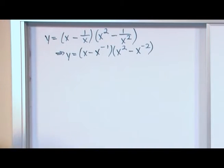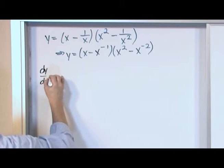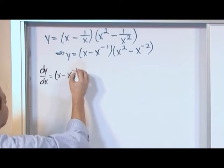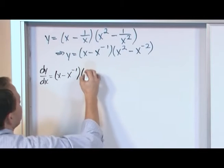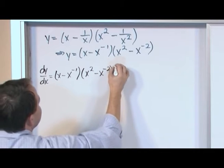Let me change colors here. But you work exactly the same way. So dy/dx is equal to first times the derivative of the second: x minus x to the negative 1 power times the derivative of this guy x squared minus x to the negative 2. Take the derivative.